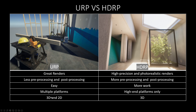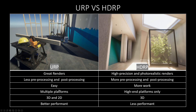The URP is suitable for both 3D and 2D-based projects. On the other hand, the HDRP is for 3D only. Finally, the URP is better performant than the HDRP, while the HDRP is less performant in comparison to the URP.